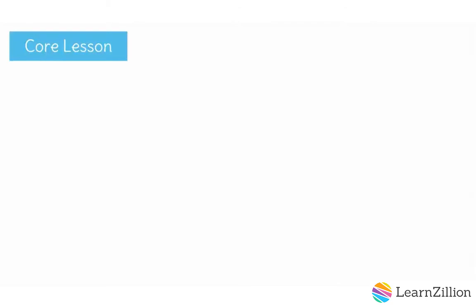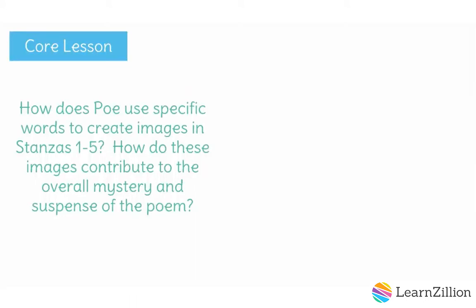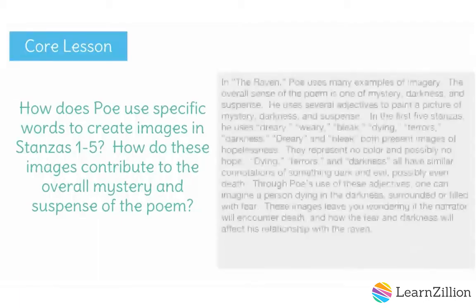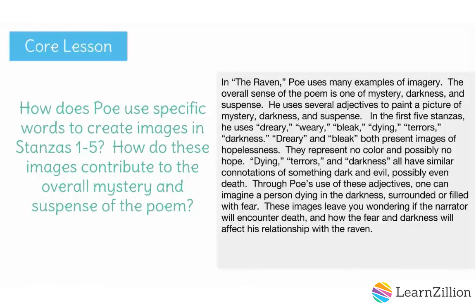Now I'm able to tie all of these thoughts together and answer my original question: how does Poe use specific words to create images in stanzas 1 through 5, and how do these images contribute to the overall mystery and suspense of the poem? In The Raven, Poe uses many examples of imagery. The overall sense of the poem is one of mystery, darkness, and suspense. He uses several adjectives to paint a picture of mystery, darkness, and suspense. In the first five stanzas, he uses dreary, weary, bleak, dying, terrors, and darkness. Dreary and bleak both present images of hopelessness — they represent no color and possibly no hope. Dying, terrors, and darkness all have similar connotations of something dark and evil, possibly even death. Through Poe's use of these adjectives, one can imagine a person dying in the darkness surrounded by fear. These images leave you wondering if the narrator will encounter death and how the fear and darkness will affect his relationship with the raven.